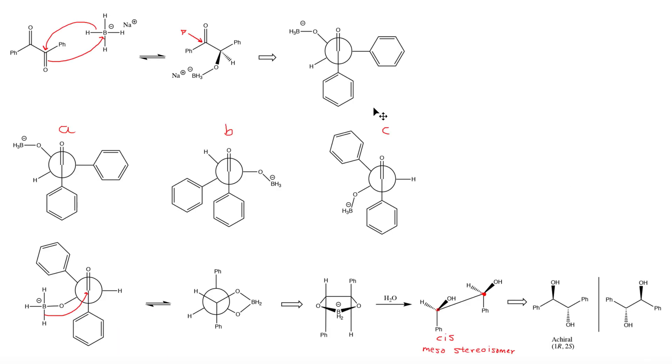So just as a quick recap, when we react benzyl with sodium borohydride, this will produce the meso stereoisomer. So this shows that this reduction reaction is stereoselective because it produces a specific type of stereoisomer.